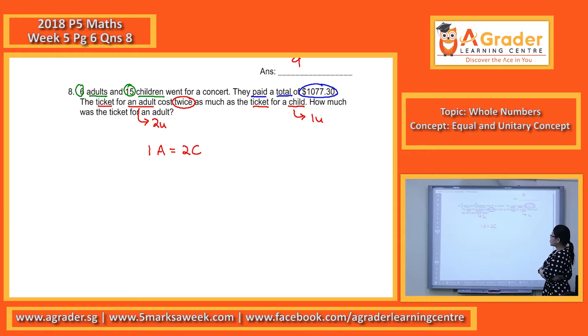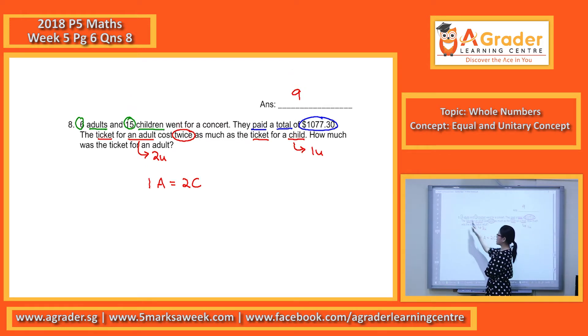So in 1 adult ticket, it's 2 children tickets, right? If you look at our first line there of 6 adults and 15 children, do you think it's easier to make the numbers of the adults the same or the numbers of the children the same? Adults. So we will make the adults the same.